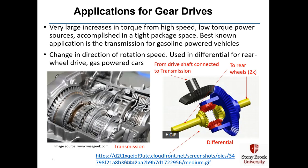This increase in torque is accomplished in a very tight package space, such as the automobile transmission shown on the left side. With a pair of gears, you will usually get a change in direction of rotation speed, and in a differential for rear-wheel drive gas-powered cars, that directional change will actually be 90 degrees. Here on the right side, we show a diagram of the gears in a differential, where the black gear comes from the transmission.